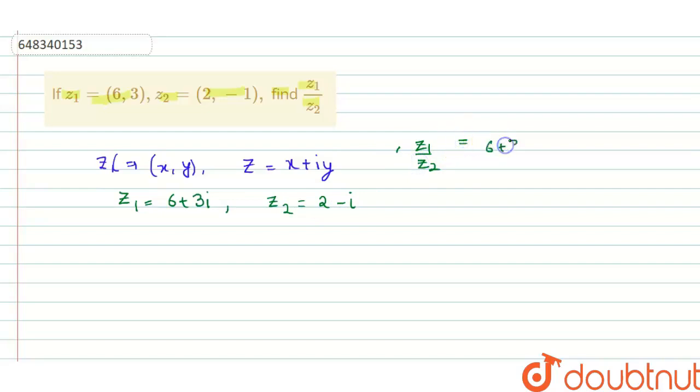6 plus 3 iota upon 2 minus iota. Now rationalizing it, so for rationalizing we will multiply it 2 plus iota upon 2 plus iota.